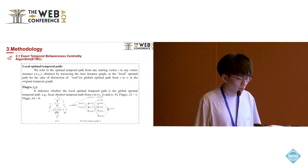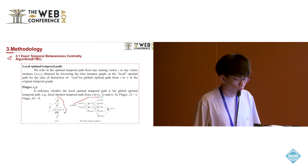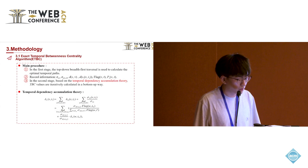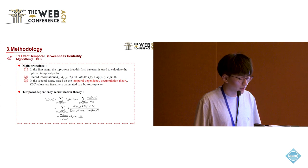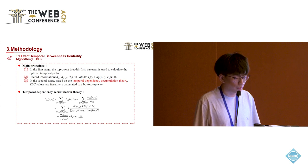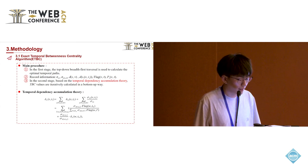For example, the local shortest temporal path from A to Y2 is also the global temporal path, so flag(Y2) equals 1. But the local shortest temporal path from A to Y6 is not the global shortest temporal path, so flag(Y6) equals 0. The main procedure of ETBC is: in the first stage, a top-down breadth-first traversal calculates the optimal temporal path, recording the number of global or local optimal paths, distances, flags, and predecessors for each vertex instance. In the second stage, based on the temporal dependency accumulation theory, TBC values are iteratively calculated in a bottom-up way.